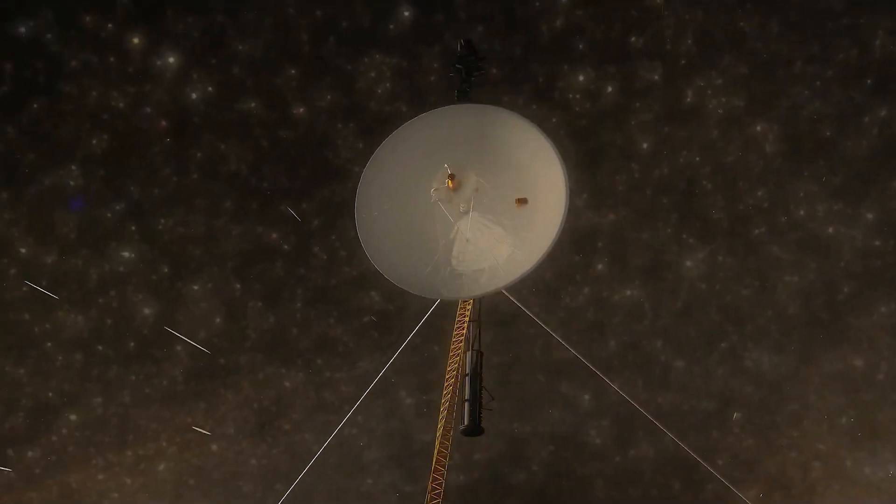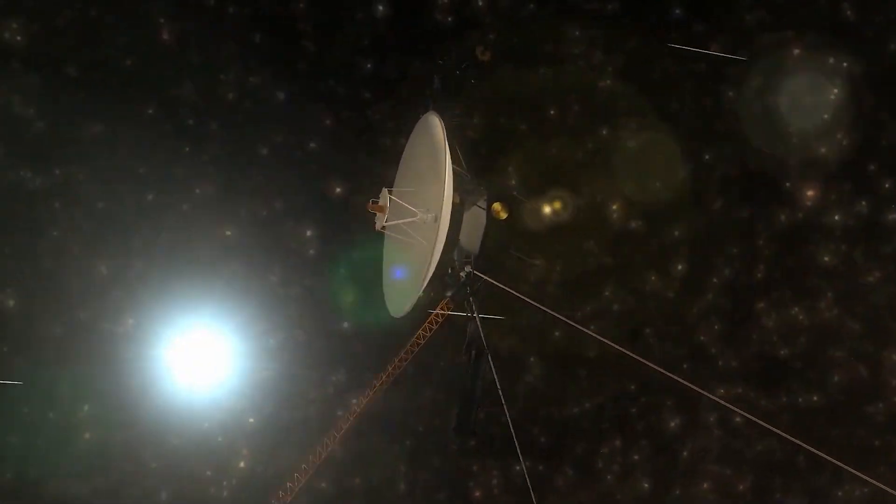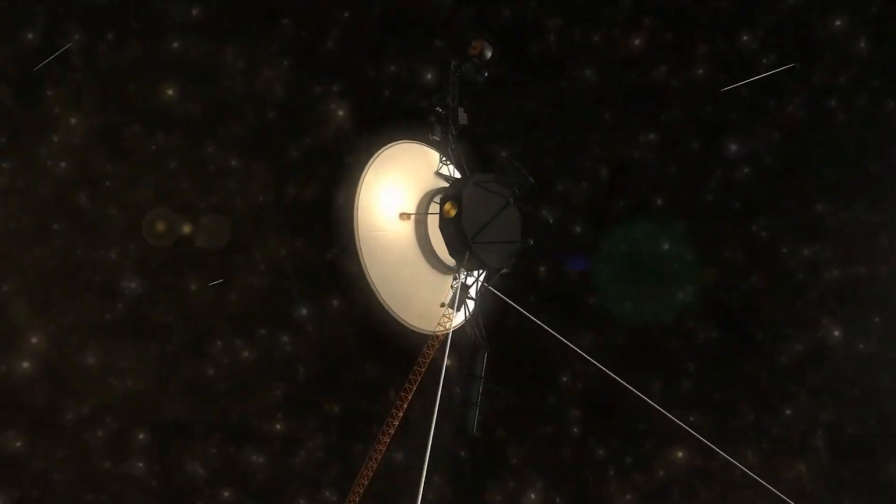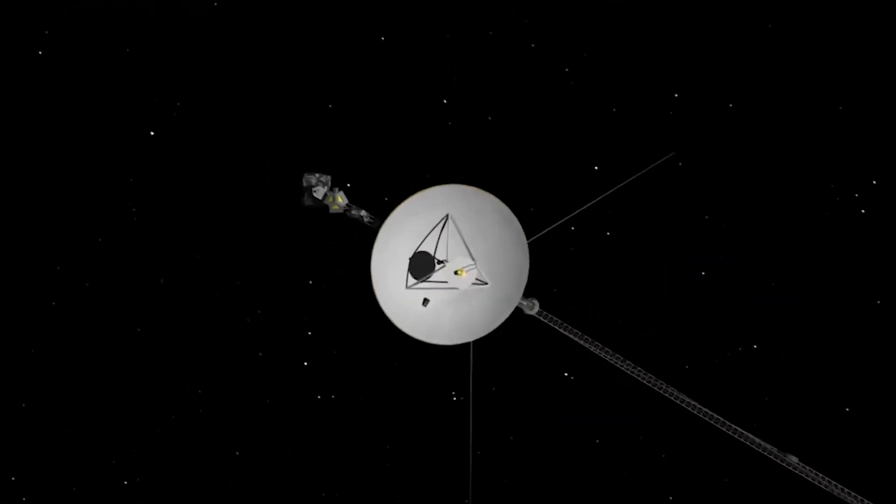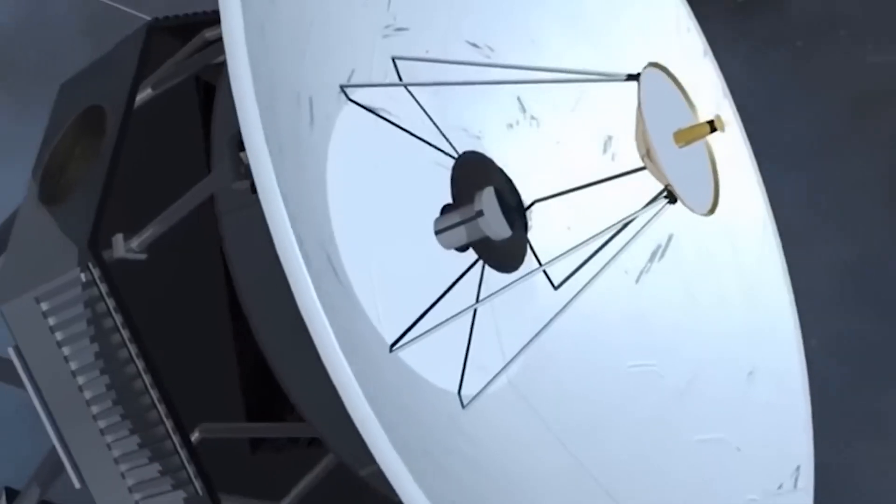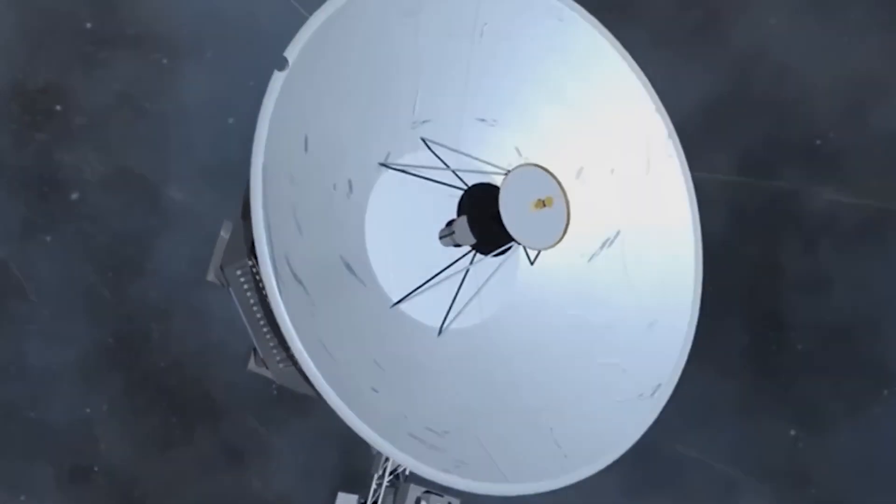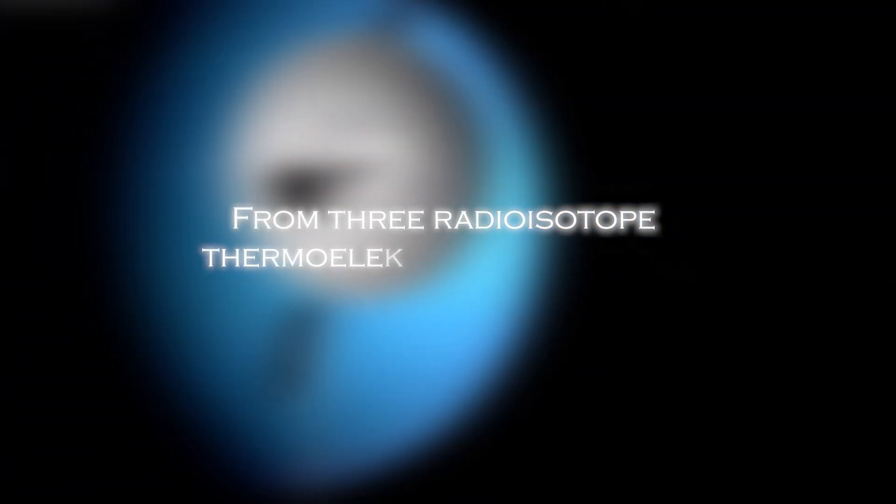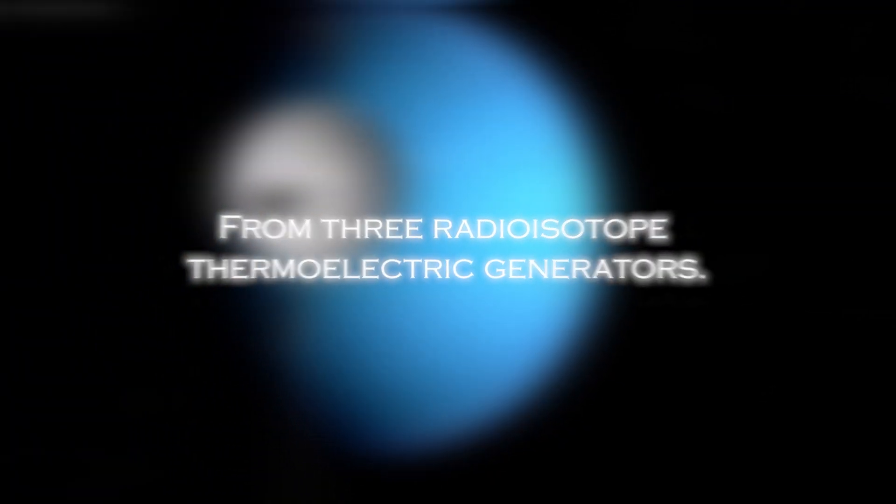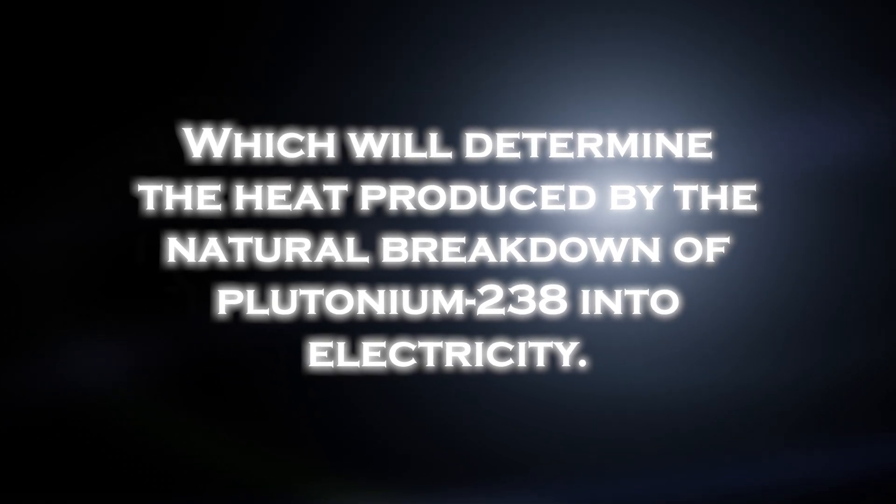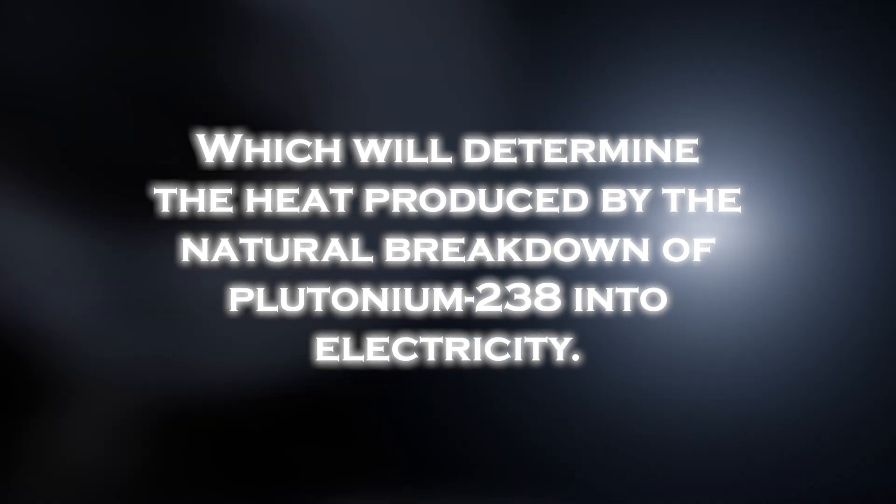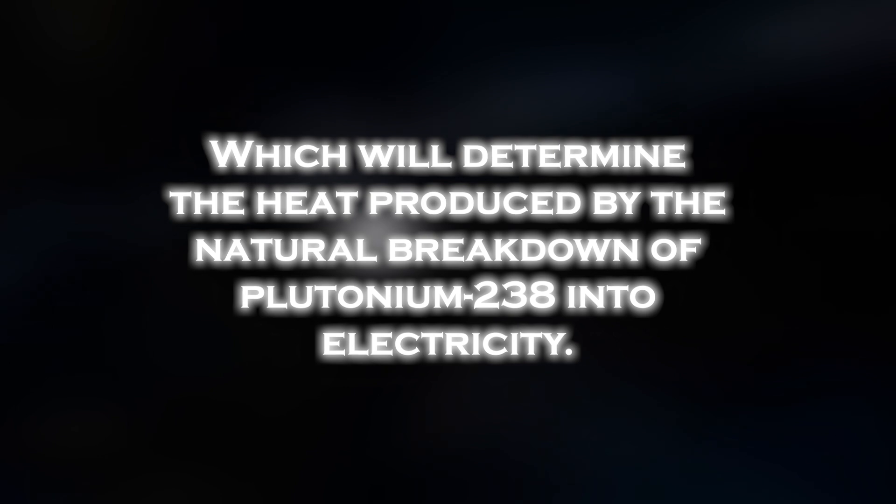However, this milestone was not easy to achieve. As the probe moved farther away from the sun, the amount of sunlight available to power its instruments and systems significantly decreased. The spacecraft's power is generated primarily from three radioisotope thermoelectric generators, which convert the heat produced by the natural breakdown of plutonium-238 into electricity.